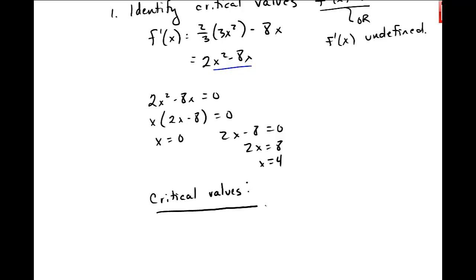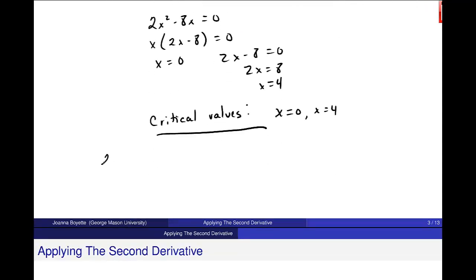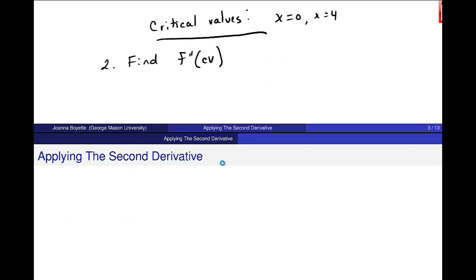Instead of making this big chart, the second derivative test says, okay, that's fine. Find the second derivative. Find f double prime at your, and I'll put in here the critical values. Okay? So I'll do that down a little bit. I know f prime of x is equal to 2x squared minus 8x. Right? So f double prime of x, and we found this before, 4x minus 8. Right?